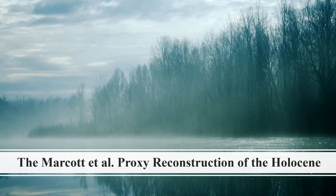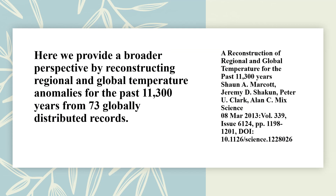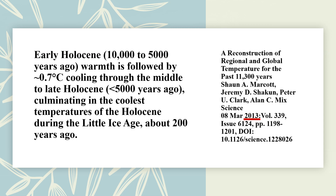The Marcotte et al. study — proxy reconstructions of the Holocene — is well known and often cited by climate scientists, including the IPCC. This complex study was published in 2013. 73 globally distributed records were collected to reconstruct regional and global temperature anomalies for the past 11,300 years. The results are summarized: Early Holocene warmth — 10,000 to 5,000 years ago — is followed by approximately 0.7 degrees Celsius cooling through the middle to late Holocene, culminating in the coolest temperatures of the Holocene during the Little Ice Age, about 200 years ago.